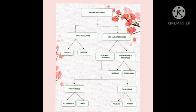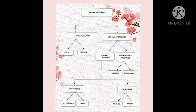Natural resources are divided into two types: living and non-living resources. Examples for living resources are forest and wildlife. Examples for non-living resources are renewable and non-renewable resources. Examples for non-renewable resources are minerals and fossil fuels. Renewable resources are divided into two types: inexhaustible and exhaustible resources. Examples for inexhaustible resources are solar energy and wind energy. Examples for exhaustible resources are wildlife and forest.